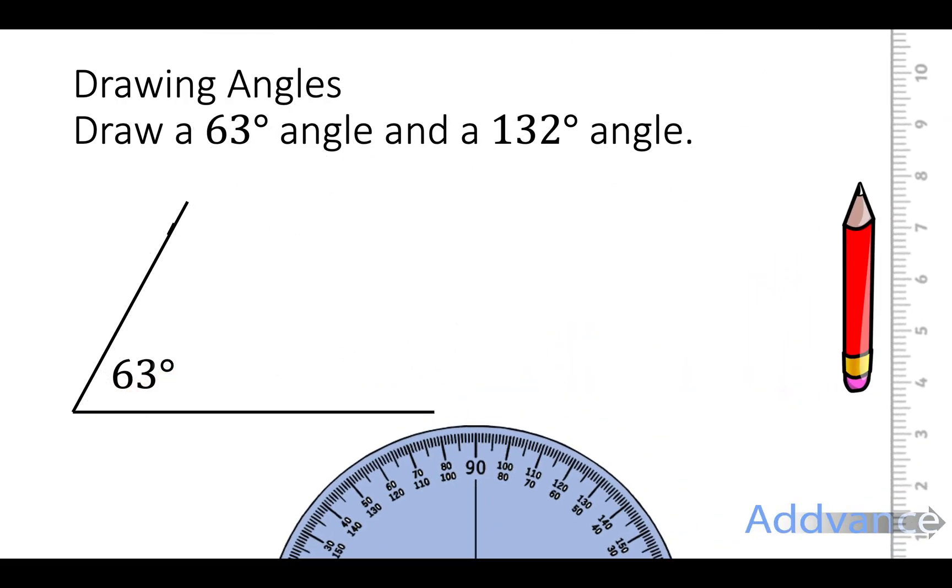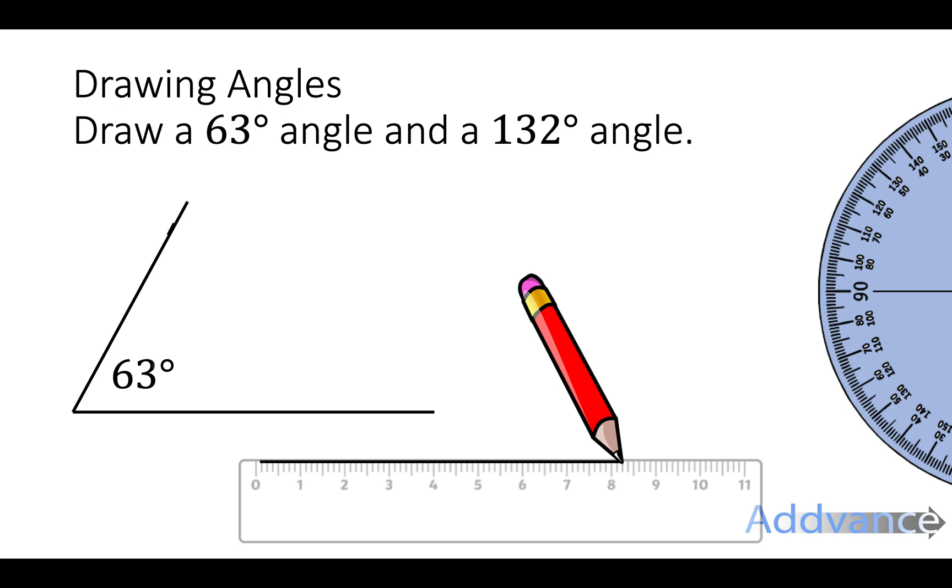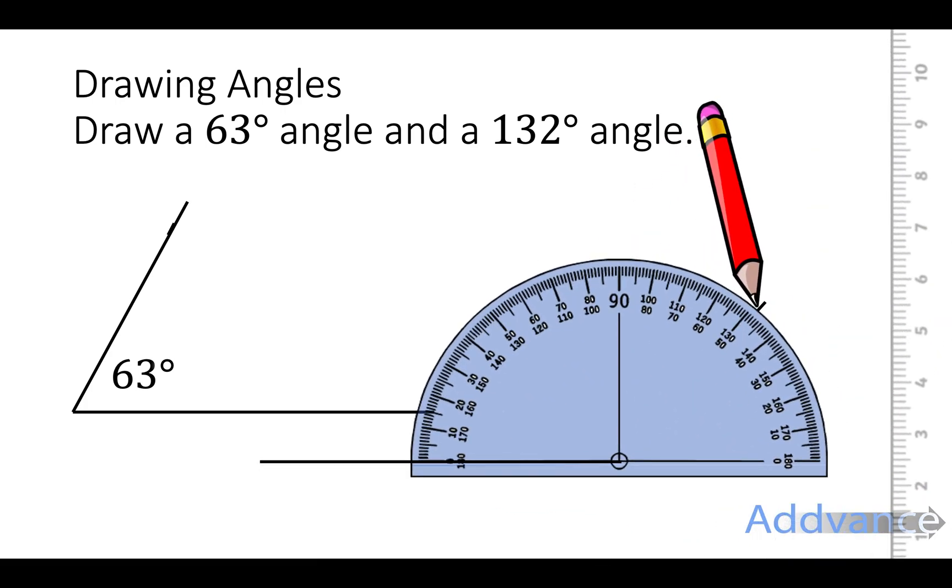Now let's do that again with 132 degrees. We draw a line. Then we take a protractor, draw a dash at 132.